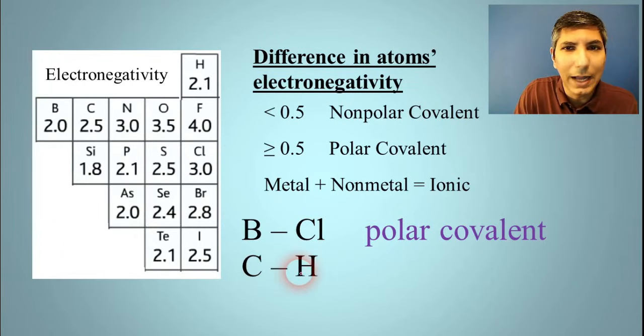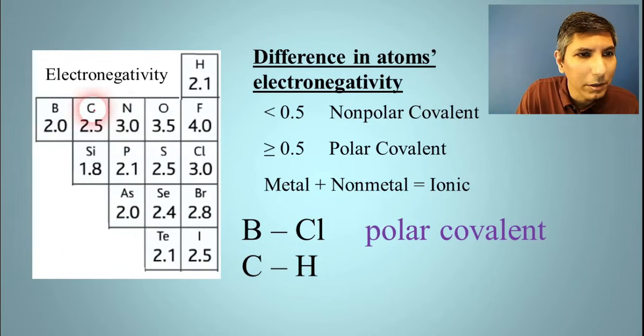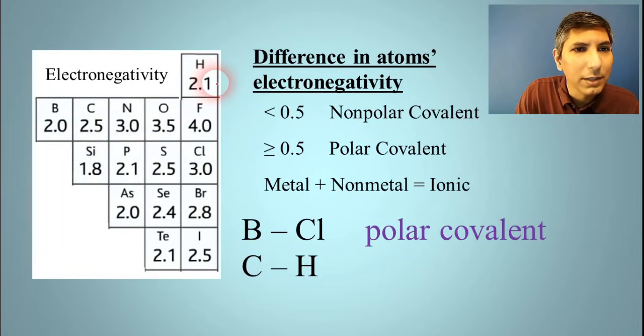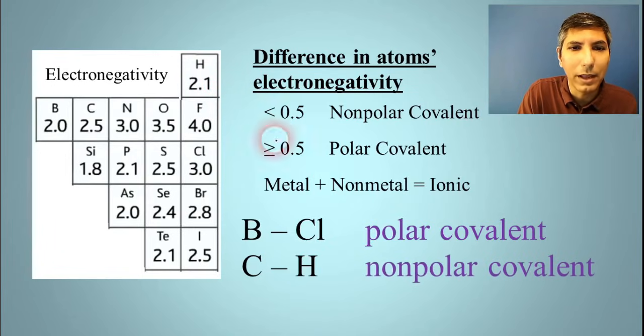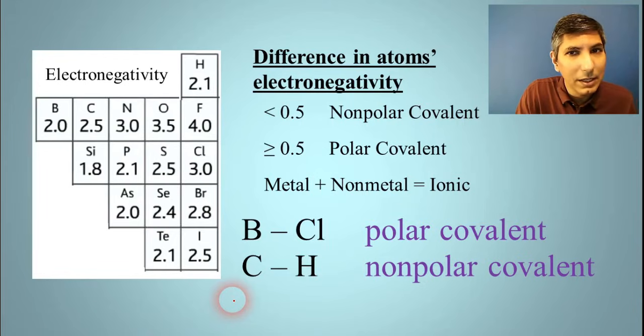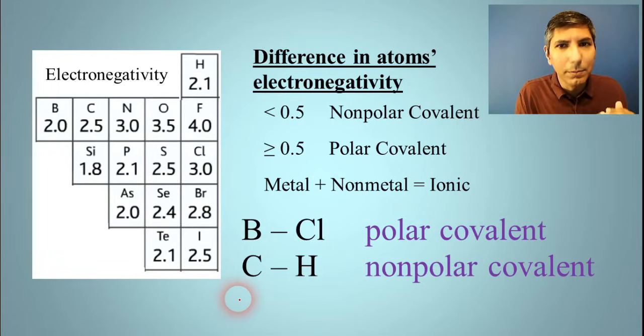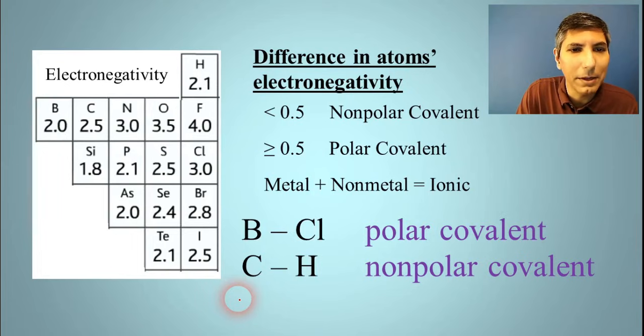How about carbon and hydrogen? Well, we can look at the chart. Carbon is 2.5. Hydrogen is 2.1. So the difference between those two is 0.4. And that's less than 0.5, isn't it? So we can call that nonpolar covalent. Now, it's not perfectly nonpolar, is it? We know that the carbon has a little bit higher electronegativity, so it may be hogging those electrons just a little bit, but not a lot. It might be a 60-40 sharing arrangement instead of a perfect 50-50.